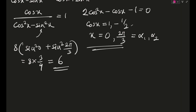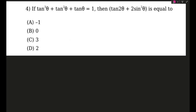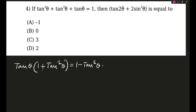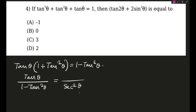Moving on to the next question — the first thing I will do is take tan θ common from tan θ and tan³θ, and move 1 − tan²θ to the right-hand side. This gives tan θ/(1 − tan²θ) = 1/(1 + tan²θ) which is sec²θ. If we multiply both sides by 2, the left side becomes tan 2θ and the right becomes 2cos²θ.